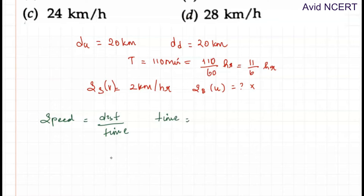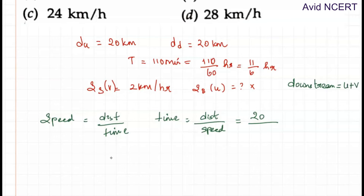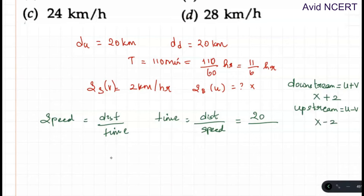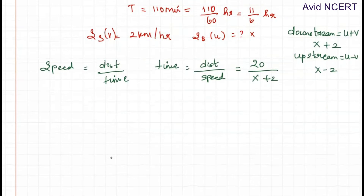Since we know time, we can express it as: time equals distance divided by speed. For downstream, the distance is 20 divided by the speed, which is u plus v — the speed of the boat in still water plus the speed of the current — so that is x plus 2. For upstream, it is 20 divided by u minus v, which is x minus 2.